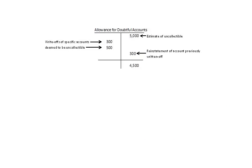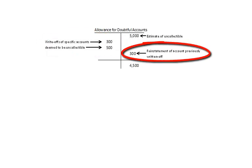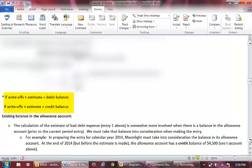The T-account for the allowance account looks like this. You credit the account for the estimate of uncollectible. You debit the account for write-offs of specific accounts deemed uncollectible. And you credit it for reinstatements of accounts previously written off. In our example, the allowance account has a credit balance of $4,500 after all entries are posted. Note that if write-offs are less than our estimate, the balance will be a credit balance. If write-offs are more than our estimate, the balance will be a debit balance. In our example, write-offs are less than our estimate, so the balance is a credit balance.